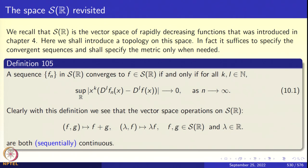Definition 105. A sequence of functions F_n in the rapidly decreasing class converges to F if the following happens: for any two natural numbers K and L, differentiate F_n L times and multiply by x to the power K, and do the same with F. Subtract, take the modulus, and take the supremum over R. That is, sup over R of |x^K · (d^L F_n)(x) − (d^L F)(x)| must go to 0 as n goes to infinity. Then we say the sequence F_n converges to F in S(R).